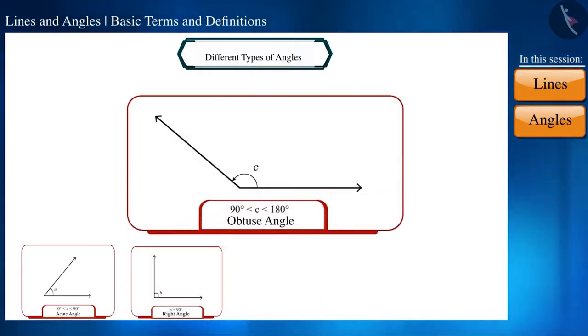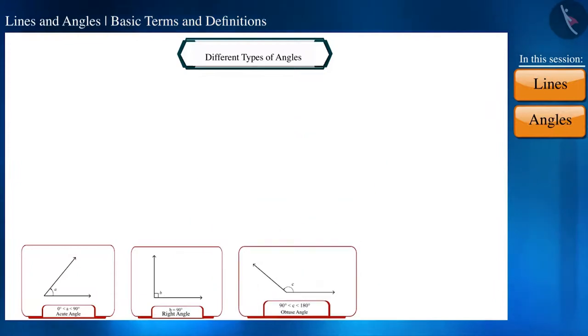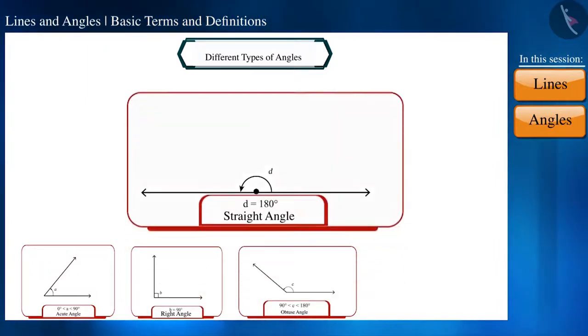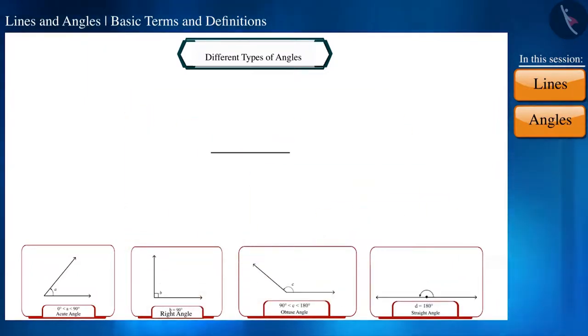If the measure of any angle is exactly 180 degrees, we call it a straight angle. If the measure is more than 180 degrees but less than 360 degrees, we call it a reflex angle.